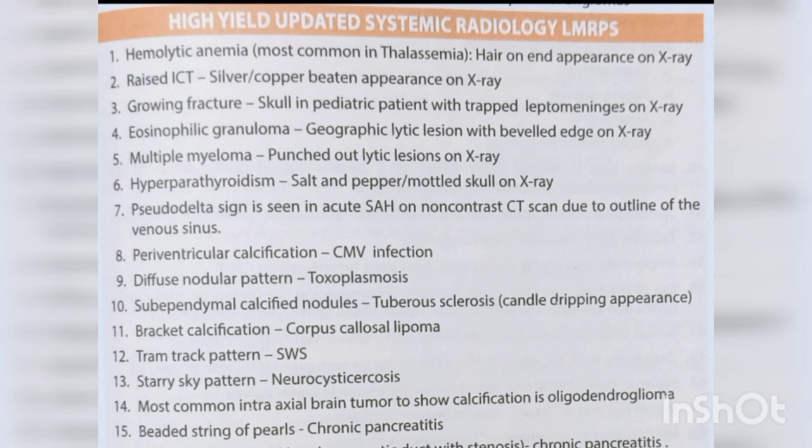Diffuse nodular pattern — toxoplasmosis. Sub-ependymal calcified nodules — tuberous sclerosis. Candle dripping appearance, bracket calcification — corpus callosal lipoma, tram track appearance. SWS (Sturge-Weber syndrome) — starry sky pattern. Neurocysticercosis — most common intra-axial brain tumor to show calcification is oligodendroglioma.